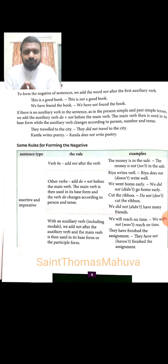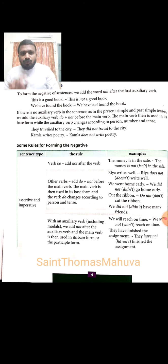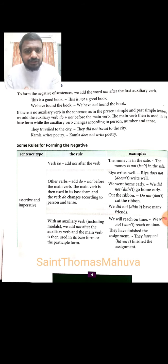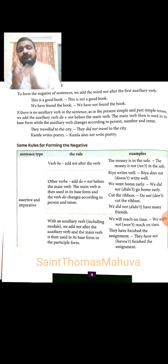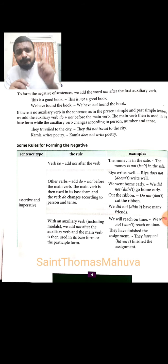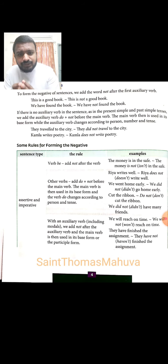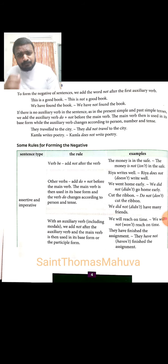Now let us look at how to form a negative. As we have seen with statements, we need to add 'not' in a sentence. For example, 'We live in Delhi' becomes 'We do not live in Delhi.' If there is an auxiliary verb, like 'is' in 'This is a good book,' we get 'This is not a good book.' If there is no auxiliary verb, we add the forms of 'do + not.' For instance, 'They traveled to the city' becomes 'They did not travel to the city' in the past tense.